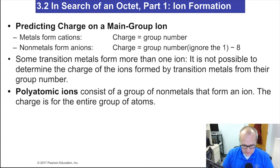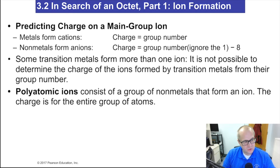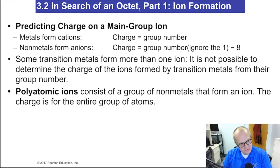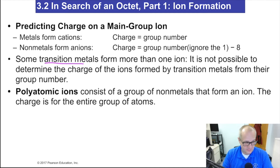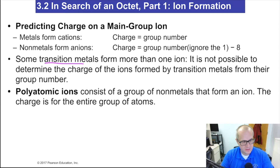This is how you predict the charge on a main group ion — that's groups 1, 2, 13 through 17. Metals always form cations; metals lose electrons. Nonmetals gain electrons — they want to gain electrons to get just like their nearest noble gas, which is three or fewer squares away. For transition metals, they can form numerous charges, which is beyond what we need for this class. Just know they can form multiple charges, whereas group 1, group 2, and aluminum have certain charges.